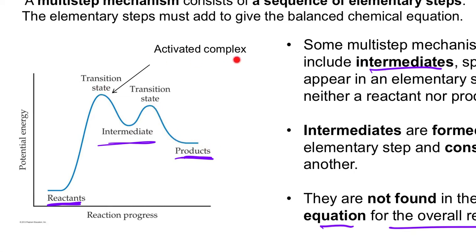Transition state, activated complex - those are the same terms. I need to be careful because on the last set of notes I said intermediate was the same term. It's not. An intermediate refers to a specific thing that is formed, and you could actually isolate it if only for a short period of time. But they are more stable than a transition state.